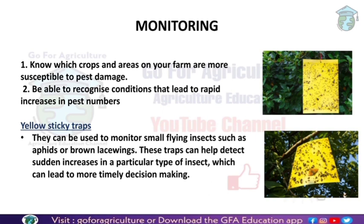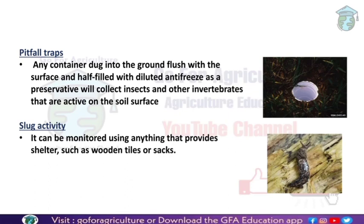Yellow sticky traps are sticky sheet-type traps, yellow in color, designed to attract pests. When insects come and land on the sheet, they stick to it. With the help of this trap, we can estimate the approximate number of pests in a particular field and also identify the variety of pests present.